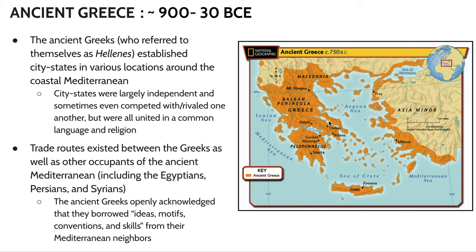They're very similar to a lot of the other civilizations that we've studied in the ancient Mediterranean, where we're starting off with these small city-states, these smaller settlements that are accumulating land and power over time, oftentimes obtaining alliances with one another or fighting with one another. So these city-states were largely independent initially and sometimes even competed with and rivaled one another, but were all united in a common language and religion.